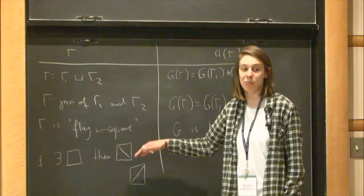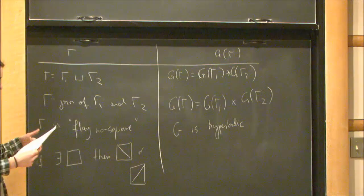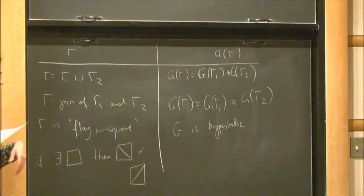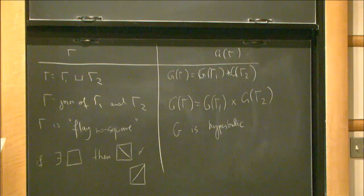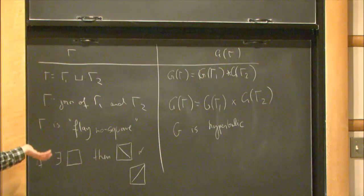There are many more properties — for example, the number of ends of G. We can also detect whether G is the fundamental group of a compact hyperbolic manifold or a finite-volume cusped hyperbolic manifold, just by looking at the graph. So there are a lot of things we can tell about right-angled Coxeter groups just from the graph.